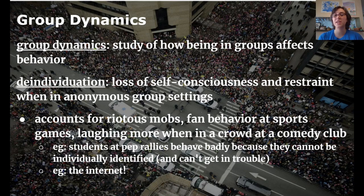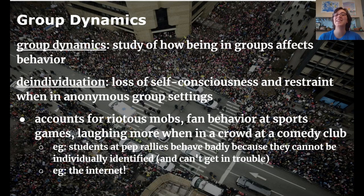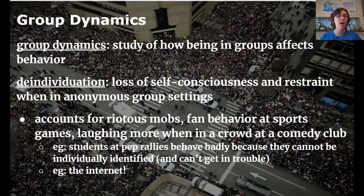We did a warm-up where we brainstormed social situations where behavior would change. Large crowds, pep rallies, sporting events, crowds at concerts came up pretty commonly — that's mob psychology, so to speak. The real name for that is deindividuation: 'de' meaning a loss of, 'individual' like your sense of individual identity, and '-ation' meaning it's a process. Deindividuation accounts for why people's behavior in large anonymous crowds tends to be pretty awful.